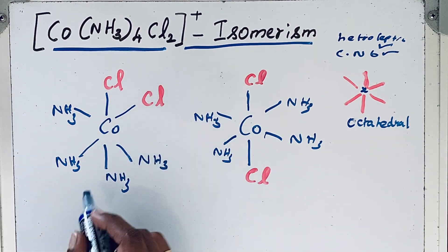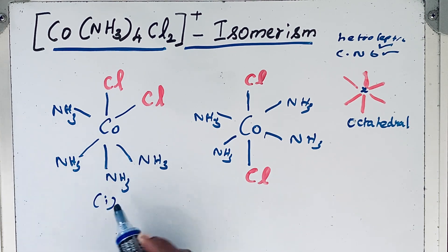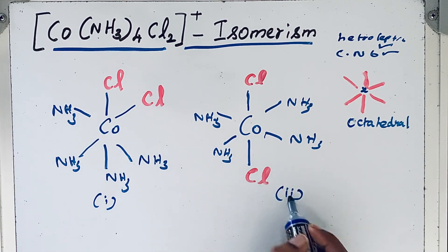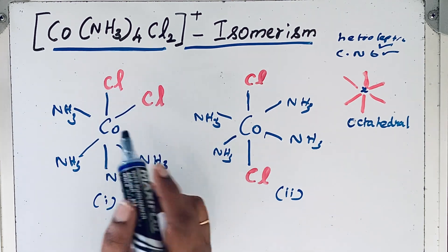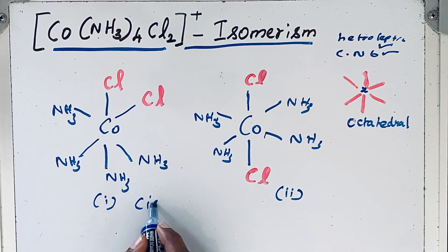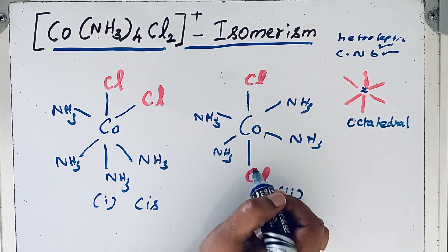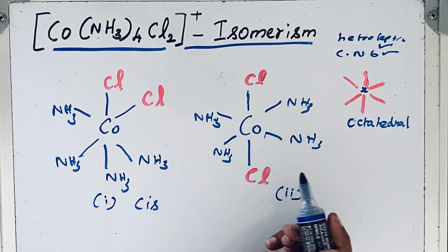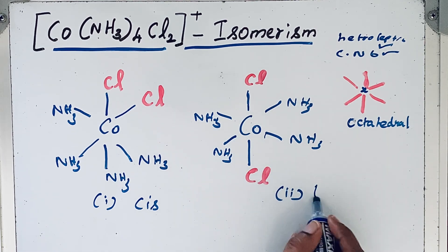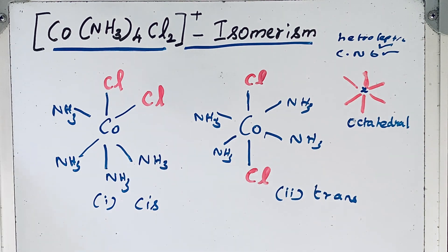So if you look at structure one, and this we keep as structure two. Here the Cl groups are adjacent to each other, so this is called cis. Then here the Cl groups are opposite to each other, that means the same ligands are opposite to each other, so this is called trans. So this is the cis isomer and this is the trans isomer.